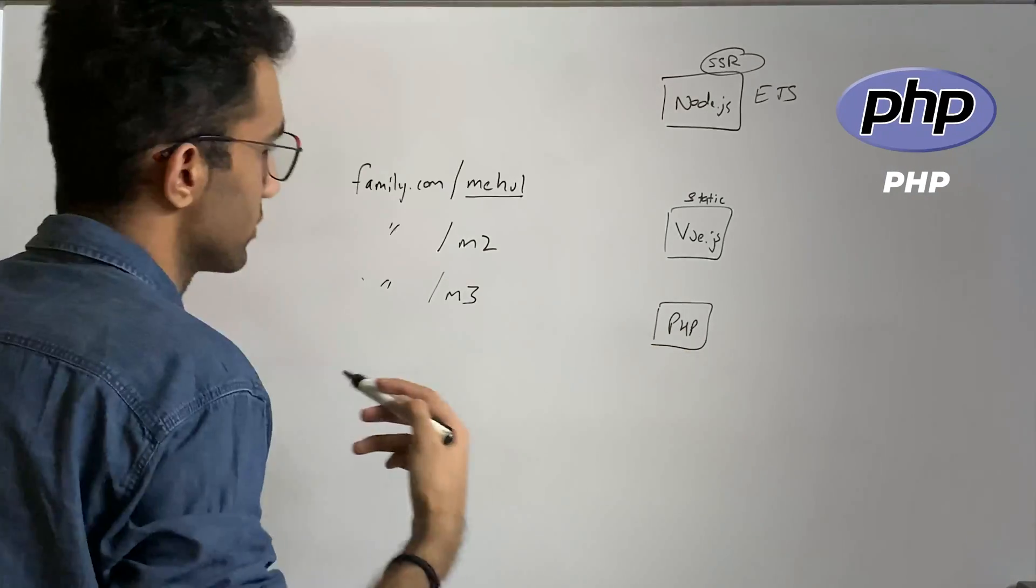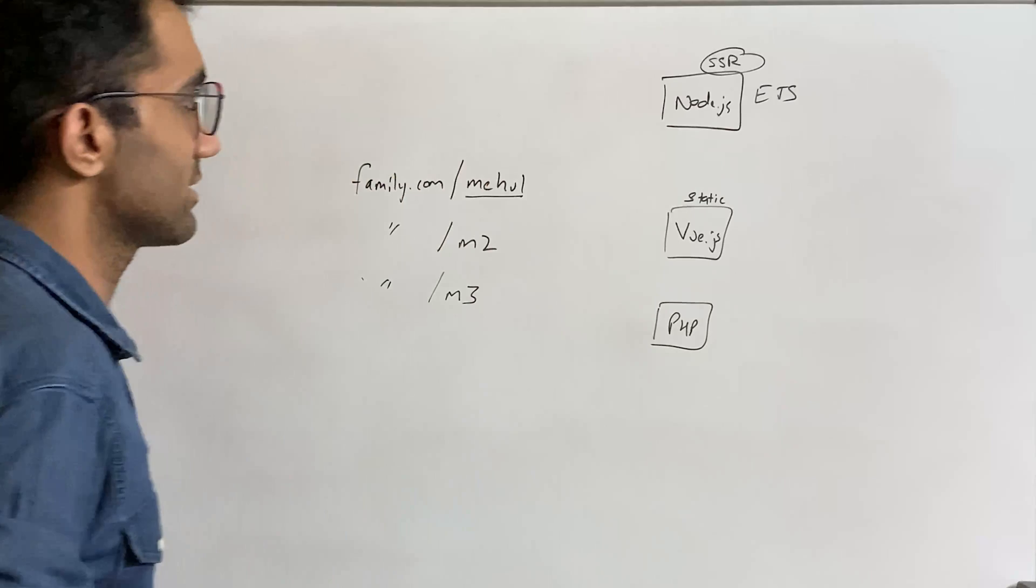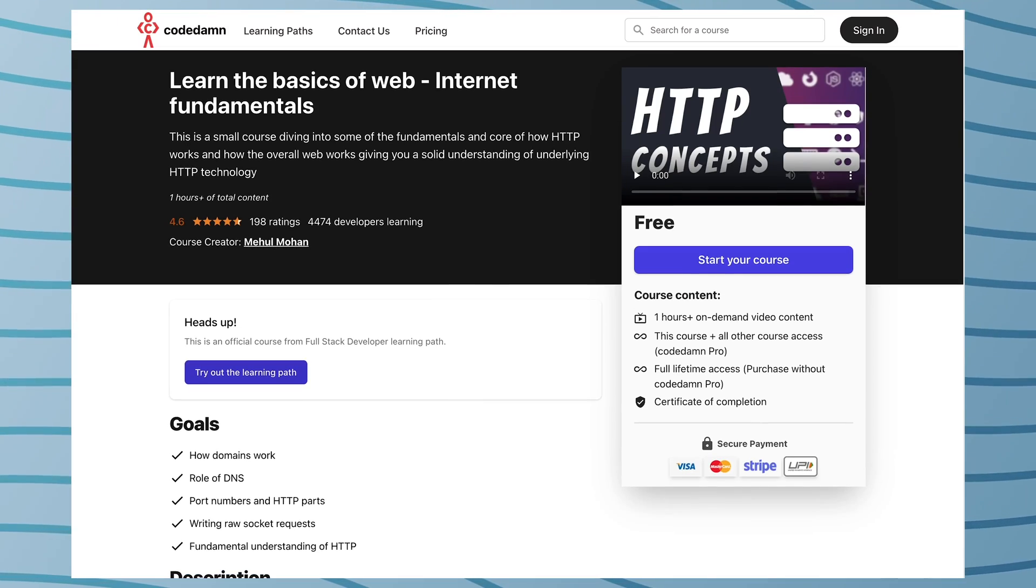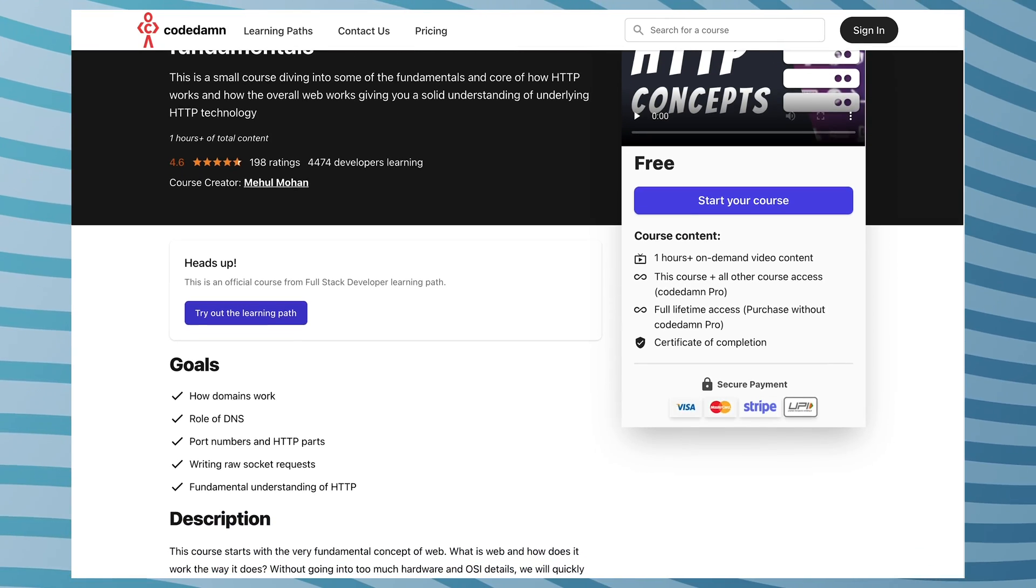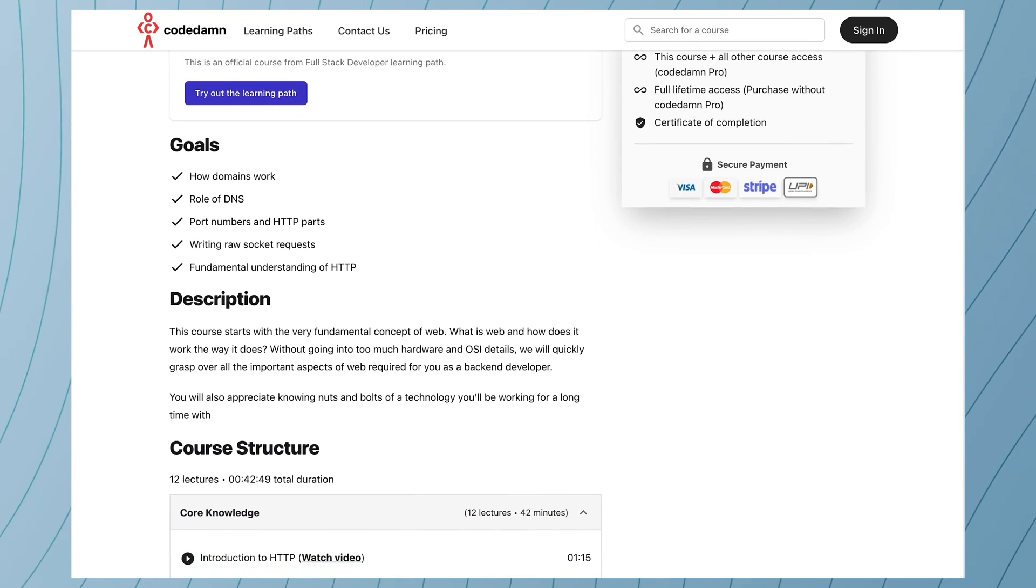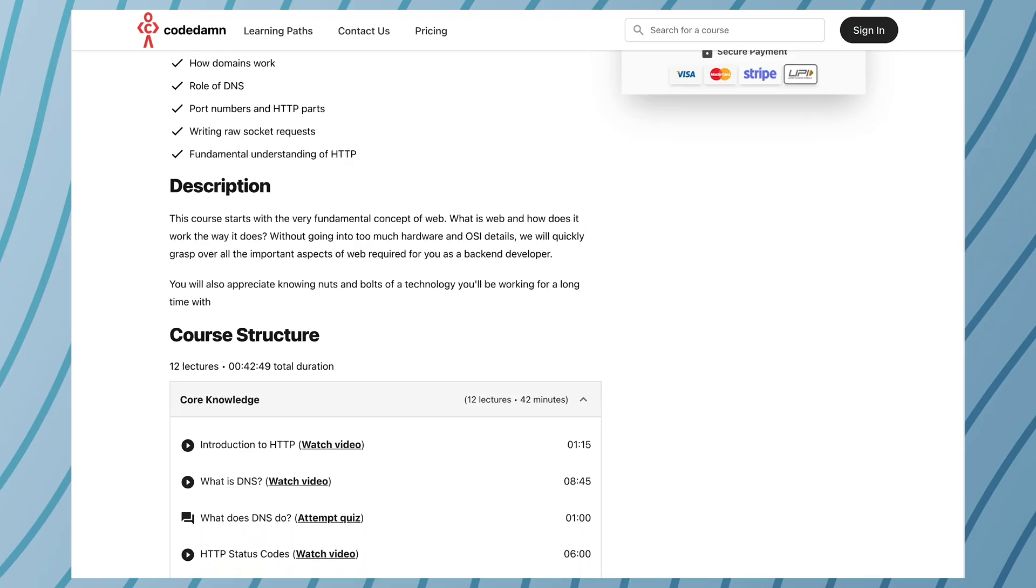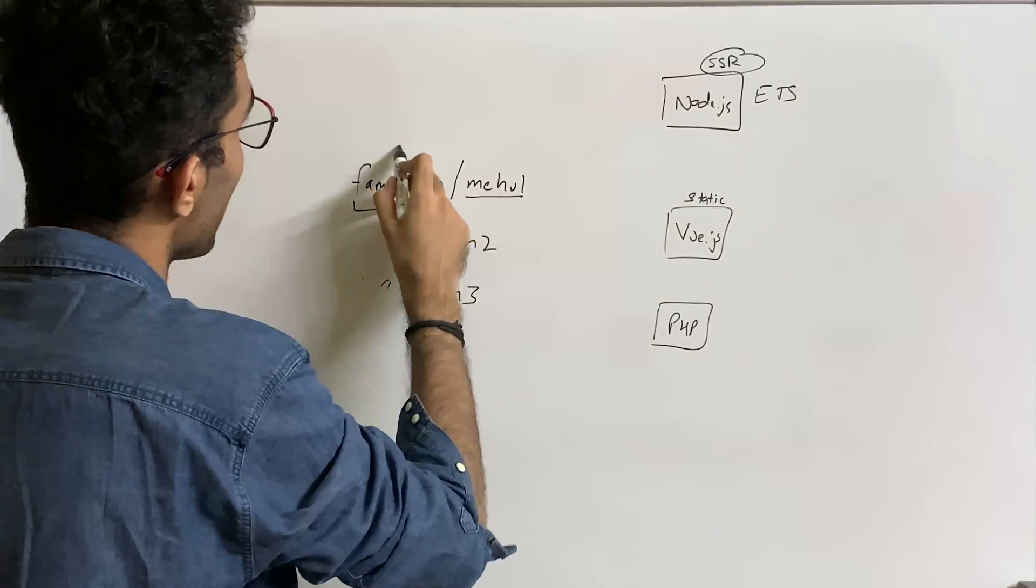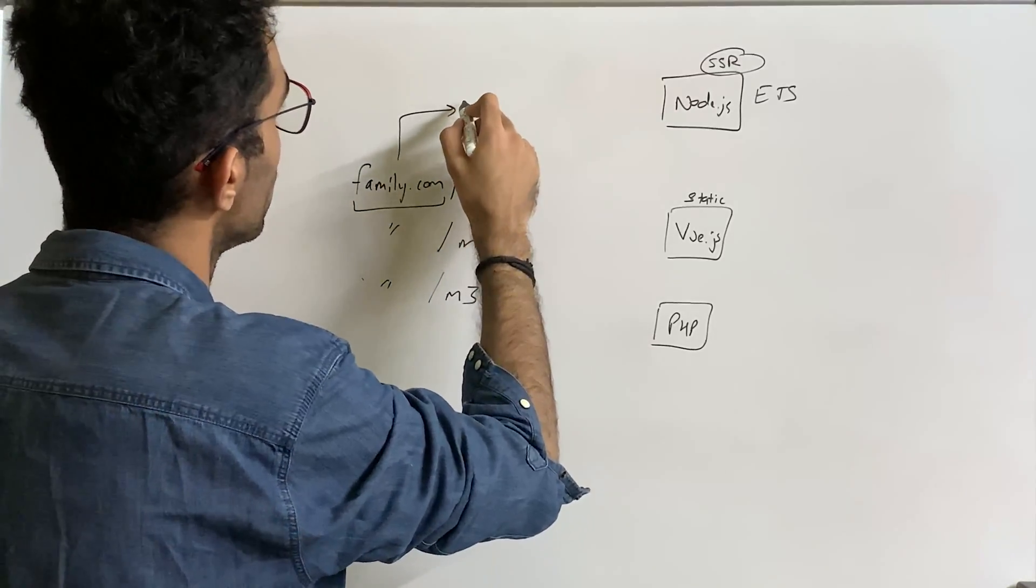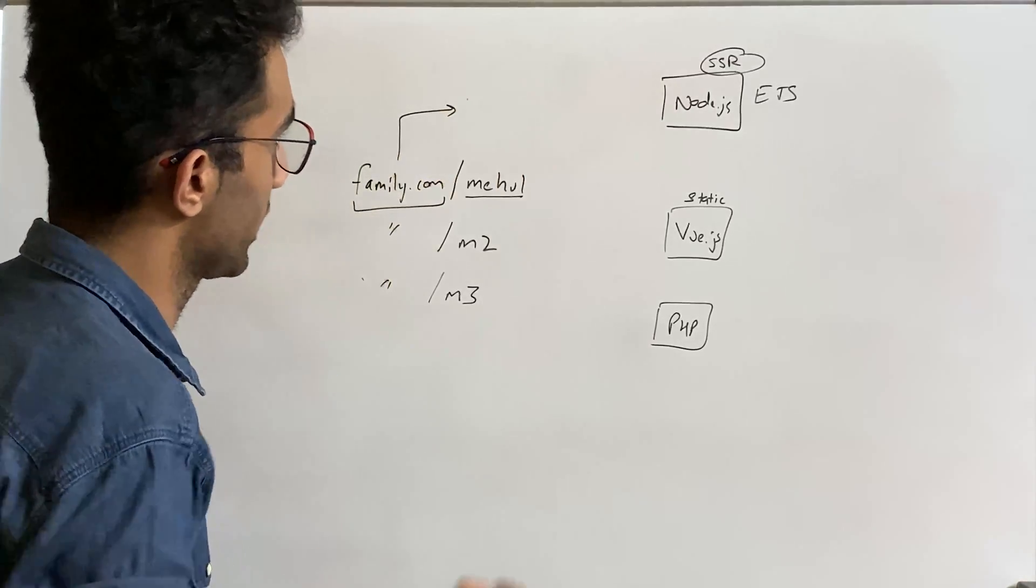Now we want to create this system. How would you possibly create something like this? Just think about this for a minute. If you have watched the CodeDamn HTTP fundamentals course, which is a free course on codedam.com, you know a few things about how domain names work. So you see this domain right here could ideally at a given time only resolve to one IP address which your browser would connect to.